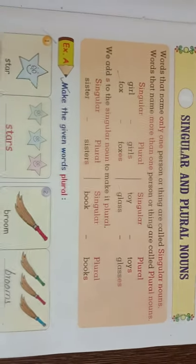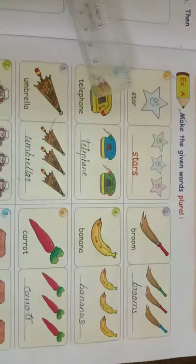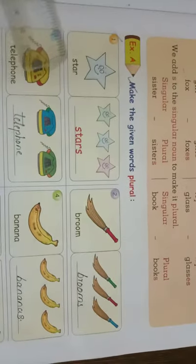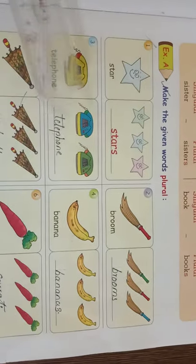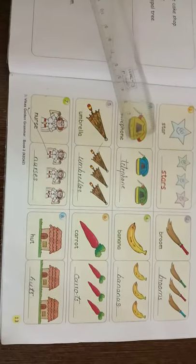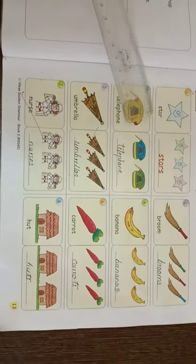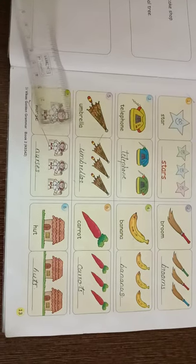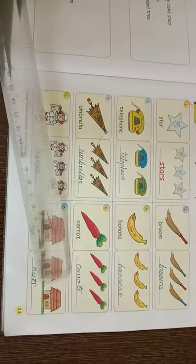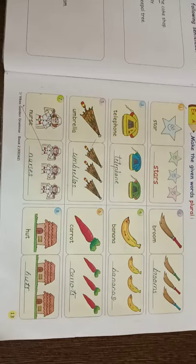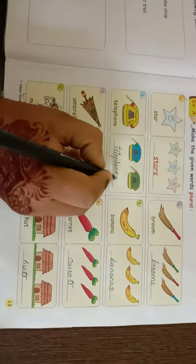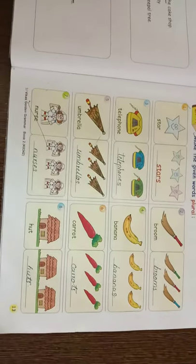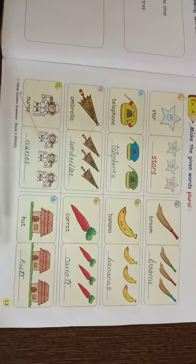Now have a look at some words and how they turn from singular to plural forms when we add only 's'. For example: star → stars, broom → brooms, banana → bananas, umbrella → umbrellas, carrot → carrots, telephone → telephones, nurse → nurses, hut → huts.